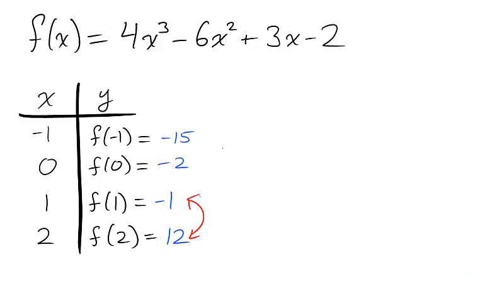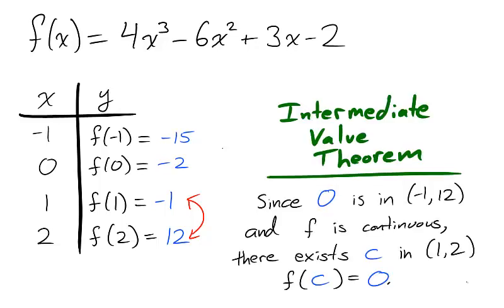Between x equals 1 and x equals 2, the y value switches from negative 1 to 12. On this interval, the Intermediate Value Theorem guarantees us a root. Since 0 is in between negative 1 and 12, and f is continuous, there exists a value of c in between 1 and 2, where f(c) is equal to 0.